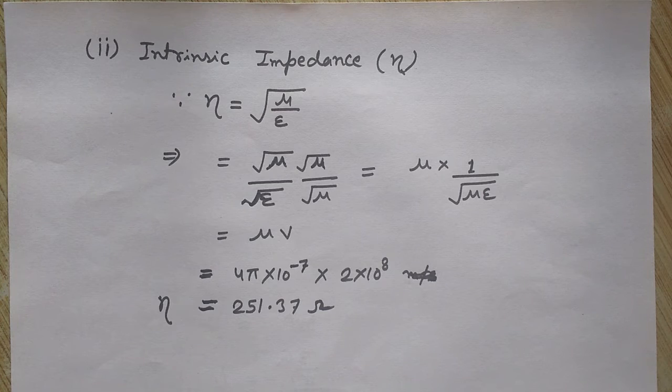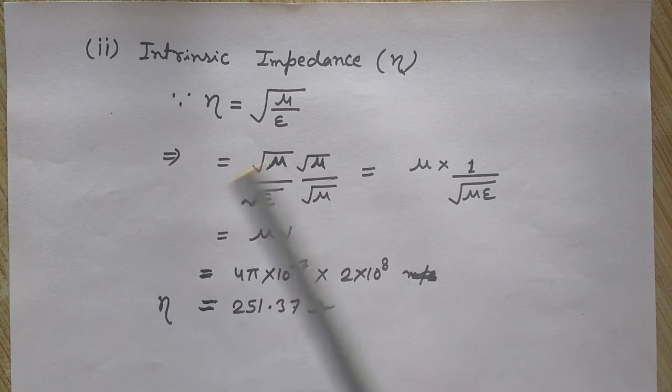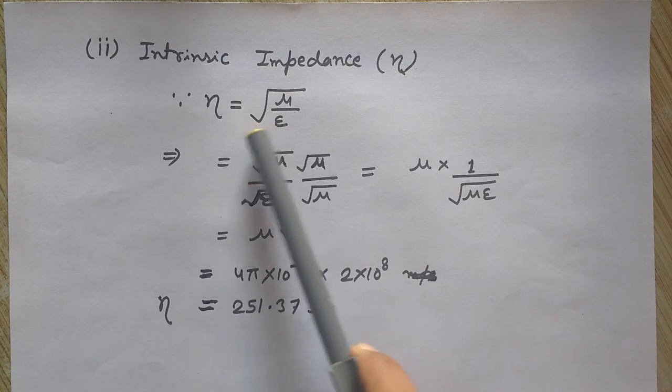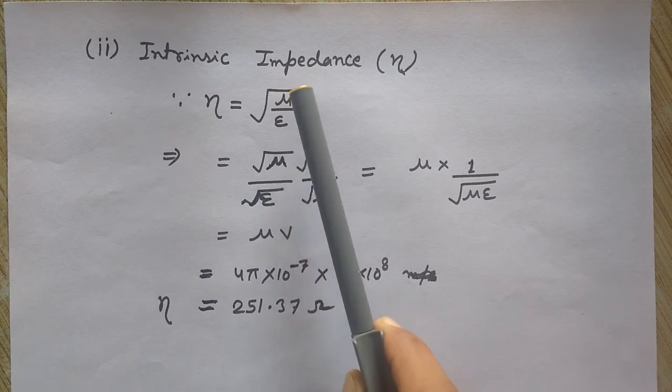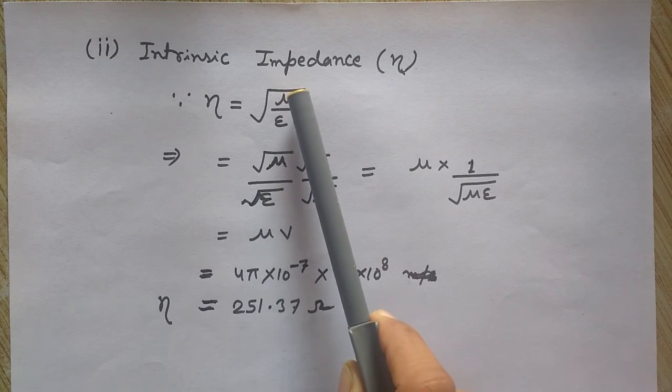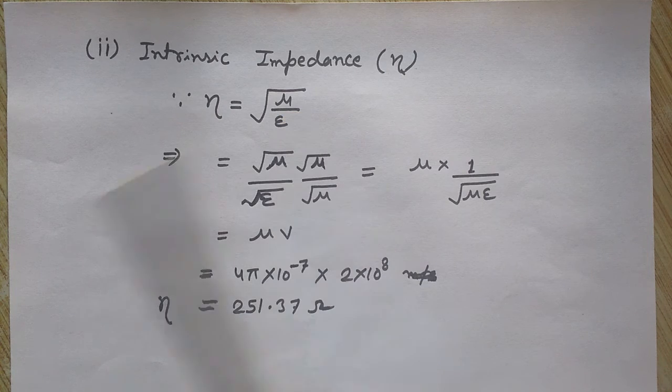Now I want to calculate the intrinsic impedance, denoted by η. This is the second part of our question. η is given by the formula η = √(μ/ε), where μ is the permeability of the medium and ε is the permittivity.